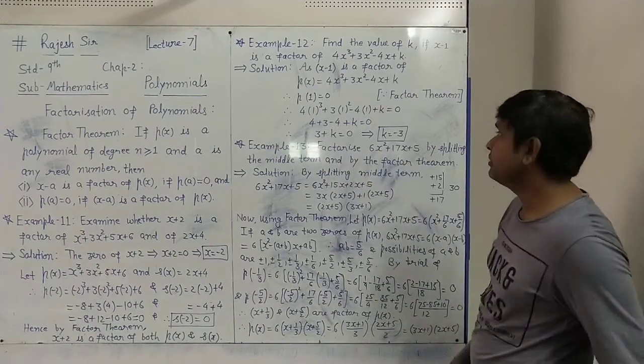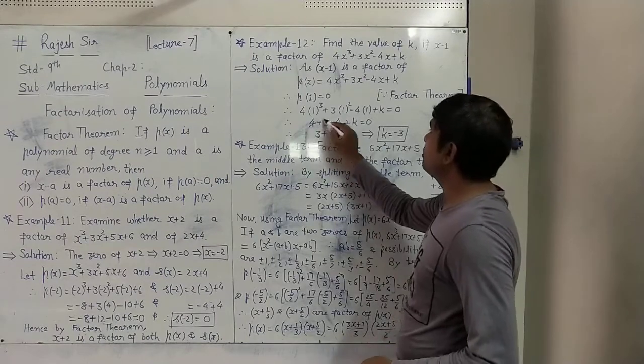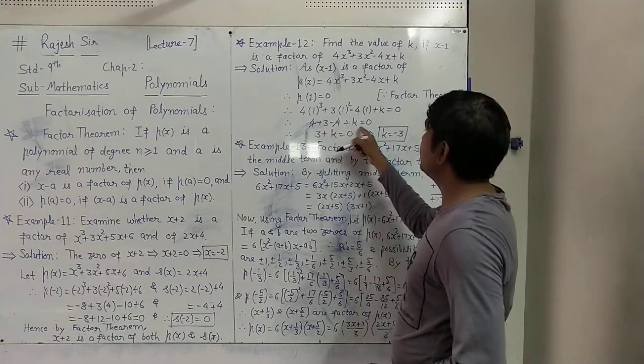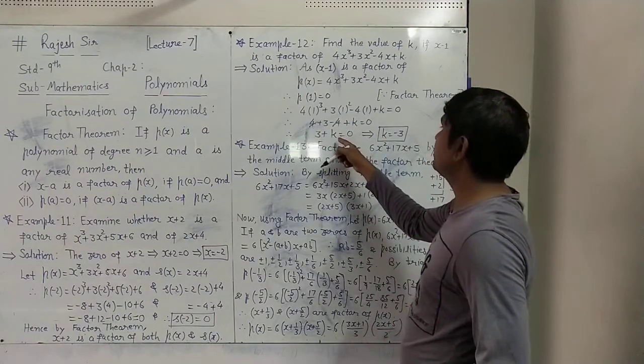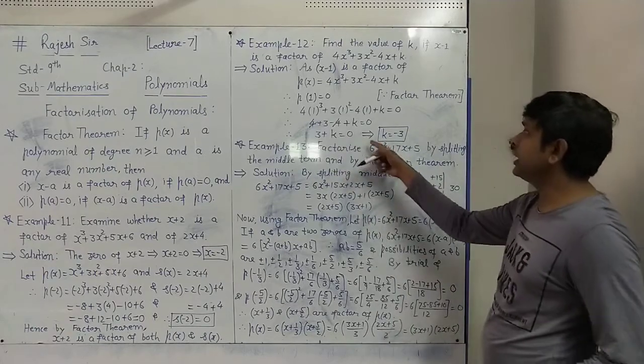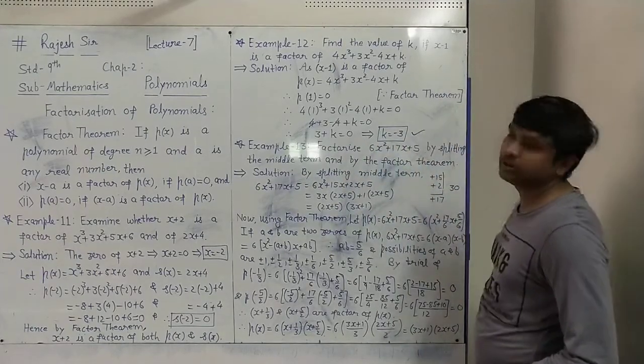Then: 1 cubed is 1, so 4 times 1 is 4. 1 squared is 1, so 3 times 1 is 3. Minus 4 times 1 is minus 4, so plus 4 minus 4 cancel. We have 3 plus k equals 0, so k equals minus 3. This is the value of k — very simple.